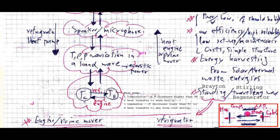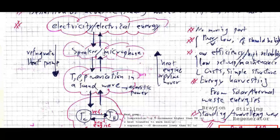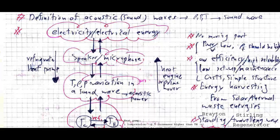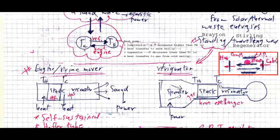In the reverse direction, we have a source of thermal power, and using the thermoacoustic heat engine we can generate acoustic waves which contain mechanical energy in the form of acoustic power. Using a secondary device such as a microphone, we can convert this acoustic power to electrical output. This is the engine or prime mover version.